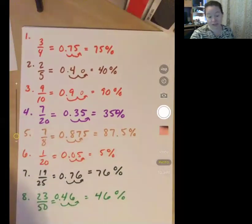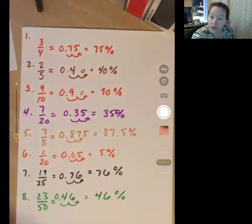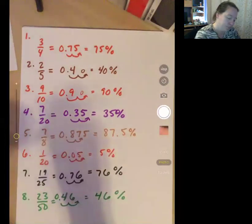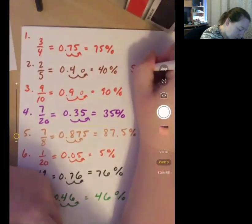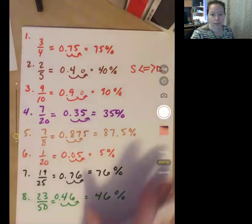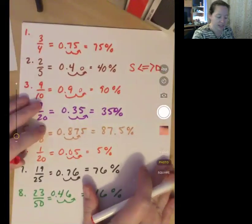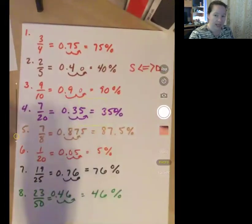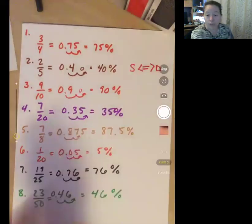Now, you can always plug it into your calculator, and if it gives it to you as a fraction, press the S to D button. S to D, standard to decimal, and it'll switch it over to the decimal from the fraction.